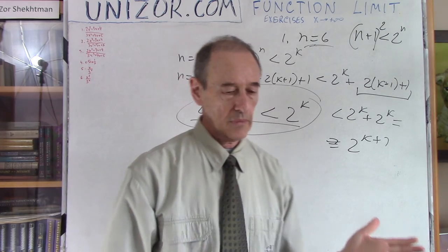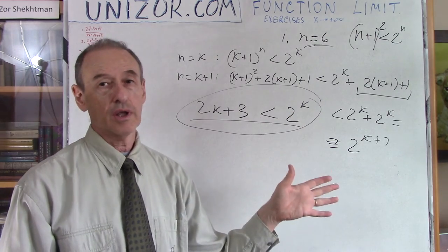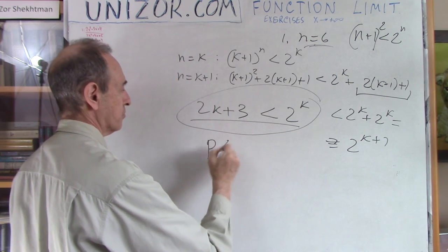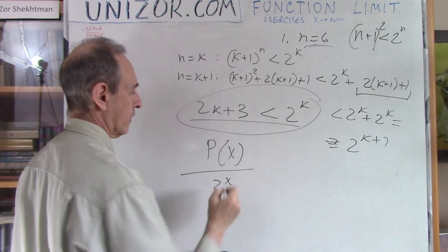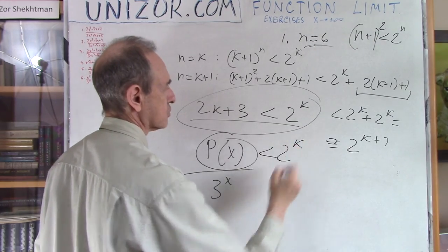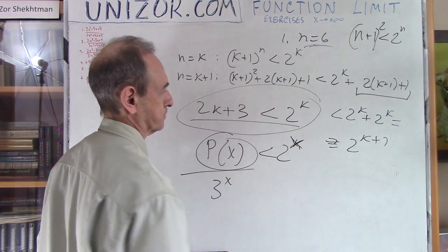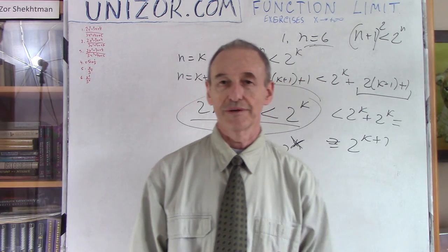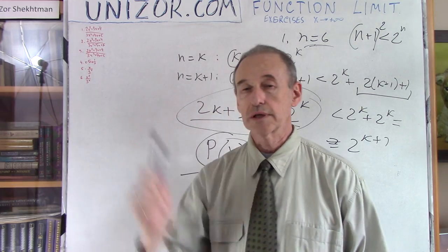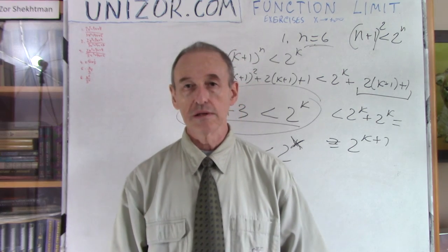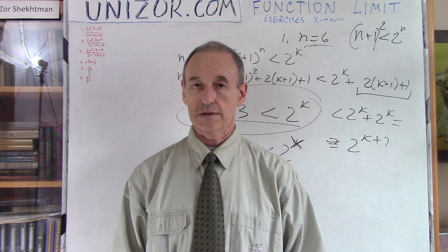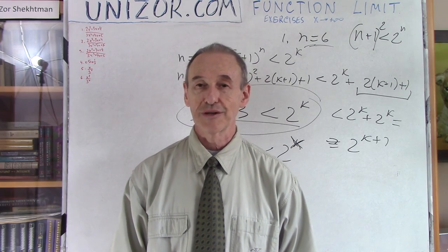This type of proof can be continued for a polynomial of any degree: any polynomial p(x) divided by 3^x goes to zero as x → ∞, because the polynomial itself will eventually be less than 2^x. That was my last problem for today. Please go to unizor.com, read through these problems, and try to solve them yourself — that would be a very good exercise. Thank you very much and good luck!